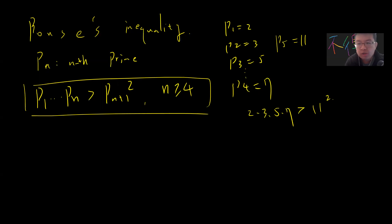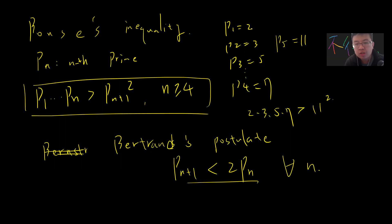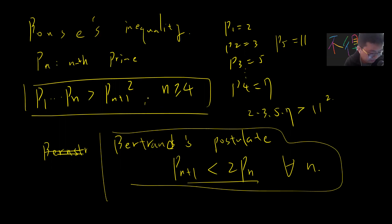This type of result I would call elementary number theory, but it's still interesting because it's very non-trivial to prove — similar to Bertrand's postulate. Bertrand's postulate says p_{n+1} is less than 2p_n for every n. In a previous video I already gave a proof of this. These results use elementary number theory without needing analytic number theory.